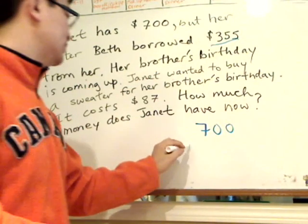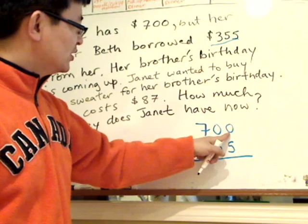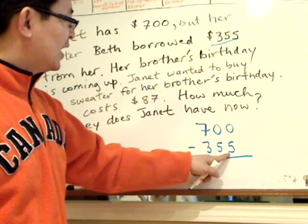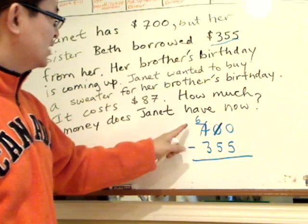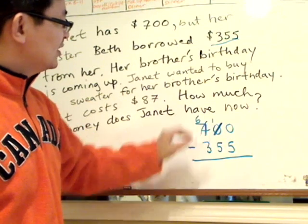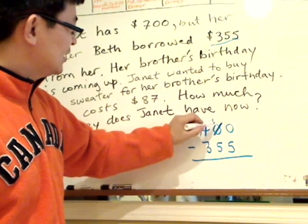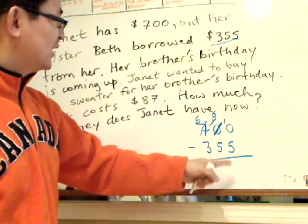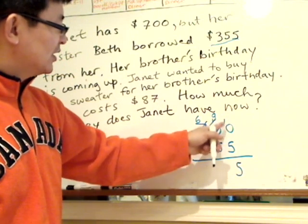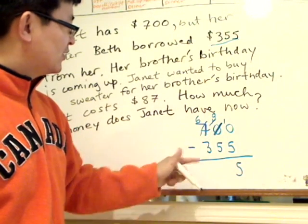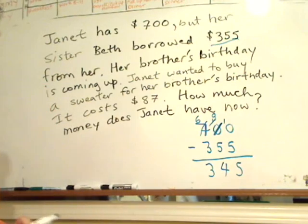Her sister took $355, so subtract that first. We have $700 minus $355. The ones digit is smaller, so we need to borrow. Since the tens digit has nothing, we borrow again from the $7, which becomes $6. The tens place becomes $10, then lends to the ones place, becoming $9. So $10 minus $5 is $5, $9 minus $5 is $4, and $6 minus $3 is $3. She has $345 left.